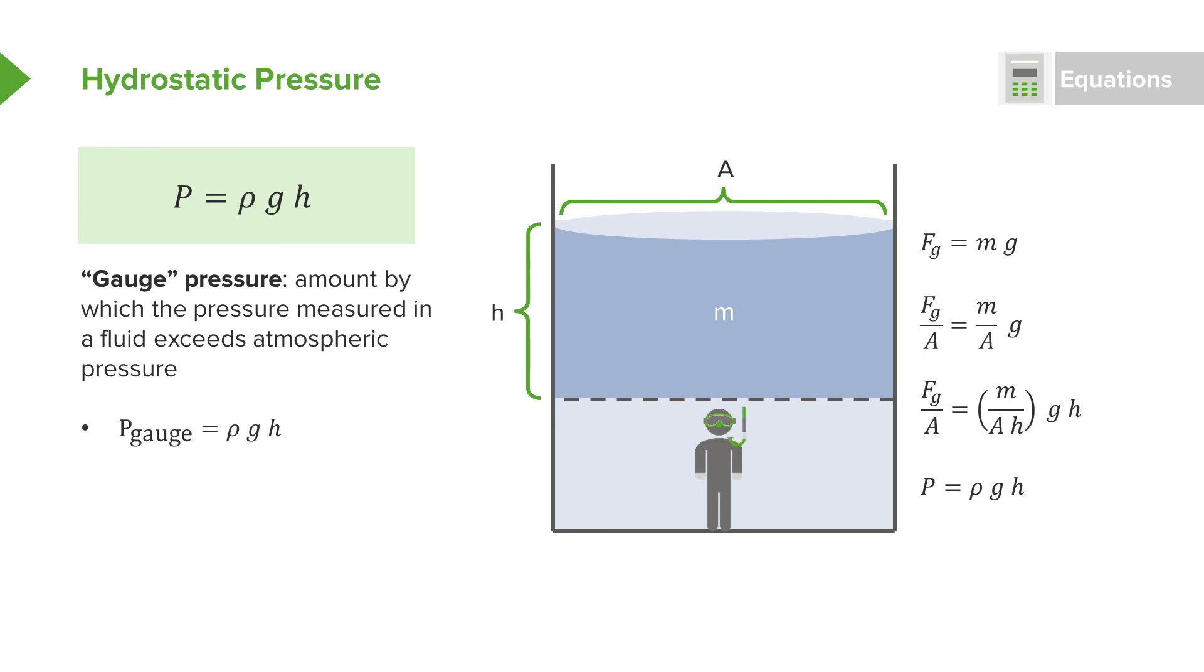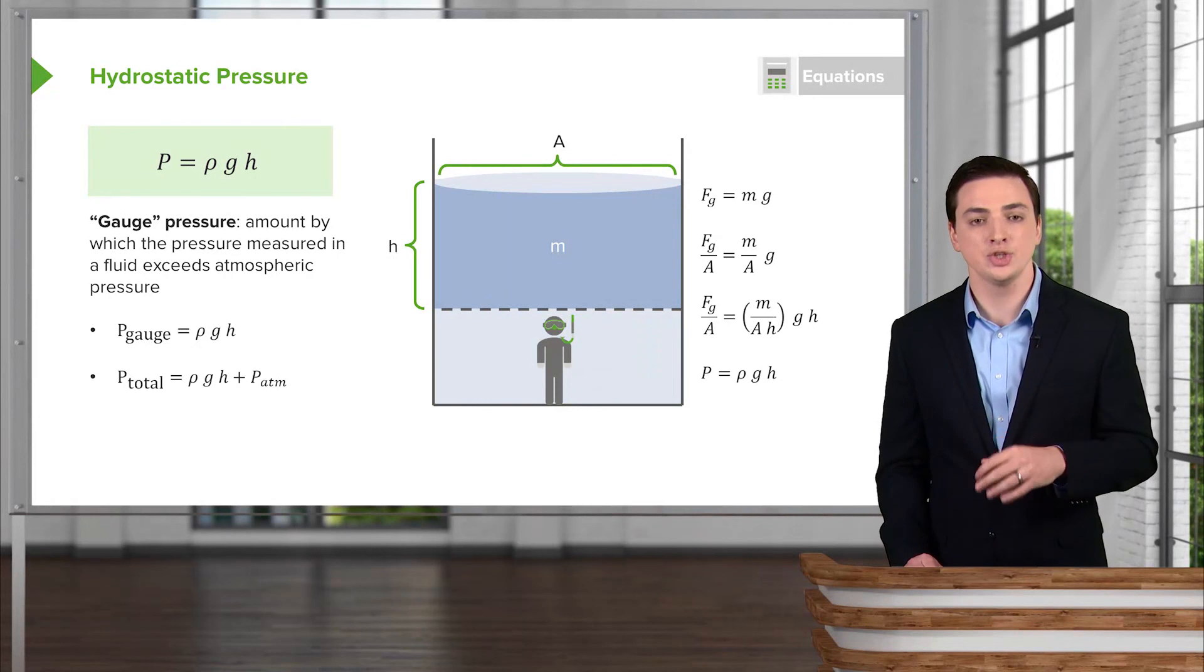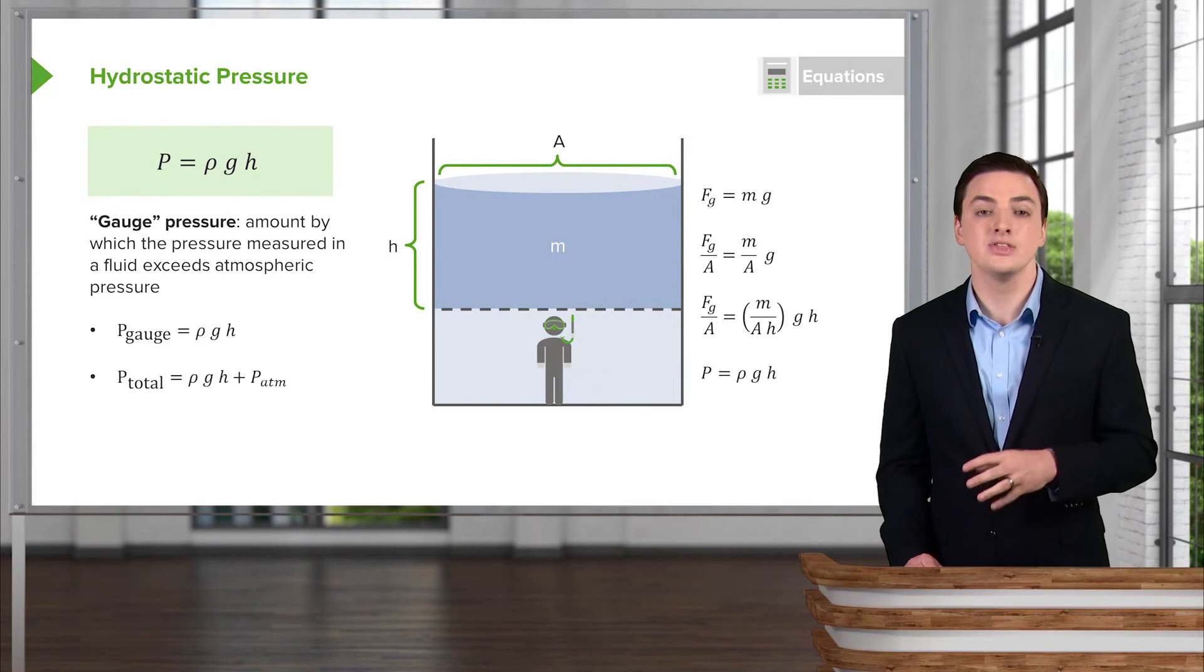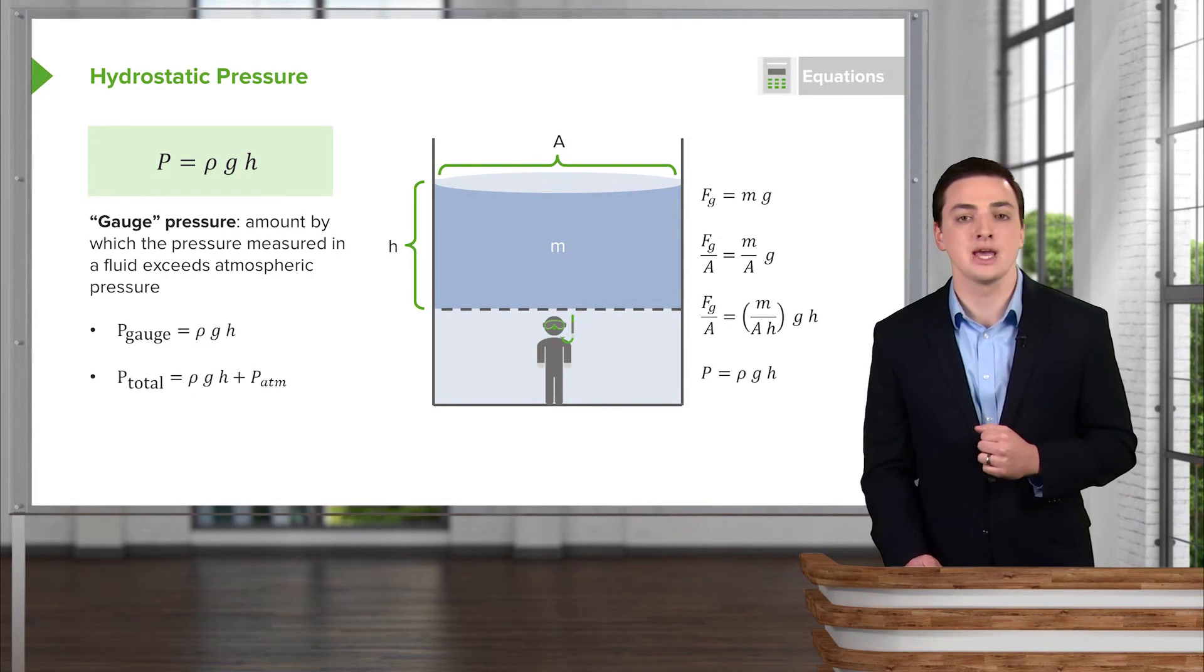If we want to talk about the total pressure, we would take this gauge pressure, rho g h, and then we would add to it the atmospheric pressure that's also pushing down on you. And so we would take the total pressure by finding rho g h, which would come from a particular fluid, and then adding any external pressures, in this particular case, the pressure from the atmosphere.